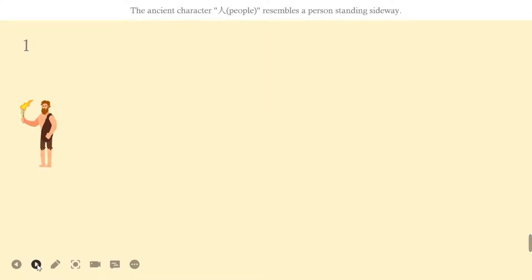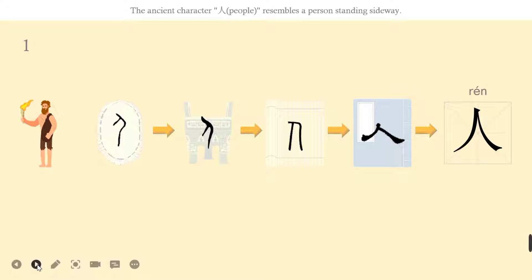Let's learn the first character, rén. You can see a man standing with his arms outstretched. The ancient character rén resembles a person standing sideways. The modern character rén has no arms, but the lower part looks like the two legs of the person.